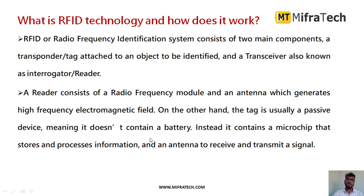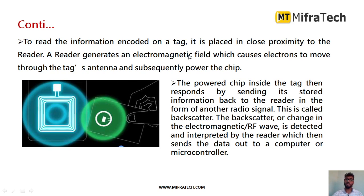The tag is usually a passive device, meaning the tag doesn't have any battery. Instead, it contains only a microchip that stores the information — like the unique identification — and an antenna to receive the transmit signal. Whenever you transmit the signal using the RFID reader module, an antenna present in the RFID tag will receive it. To read the information encoded on a tag, it has to be placed in close proximity to the reader range. The reader generates an electromagnetic field which causes electrons to move through the tag, and subsequently it will power the chip so that it can identify the tag.